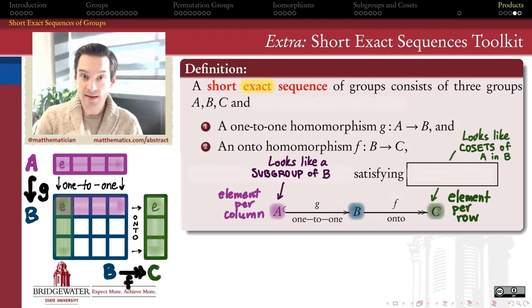What does the word exact mean in this abstract context? So the word exact here is capturing the relationship of the subgroup A, the image of A inside of B, and the identity element here in my group C.